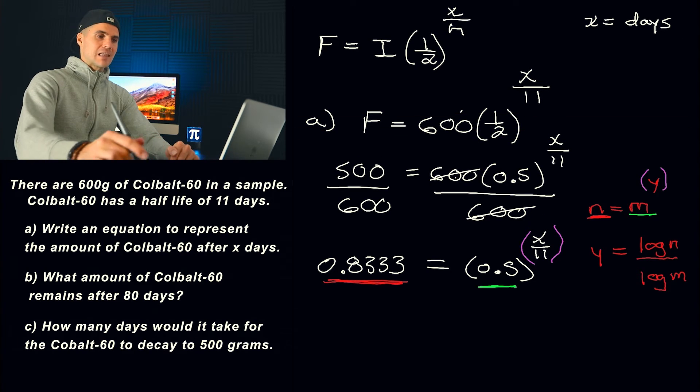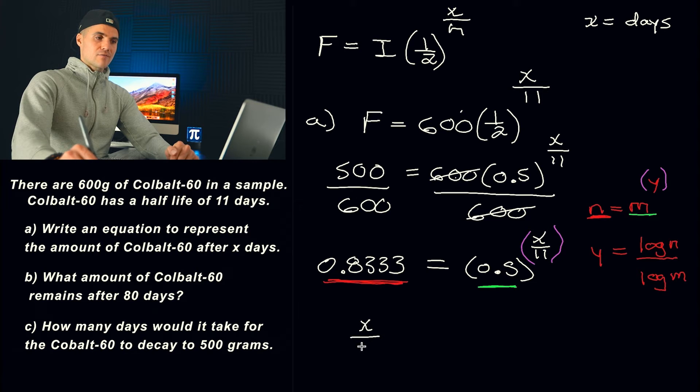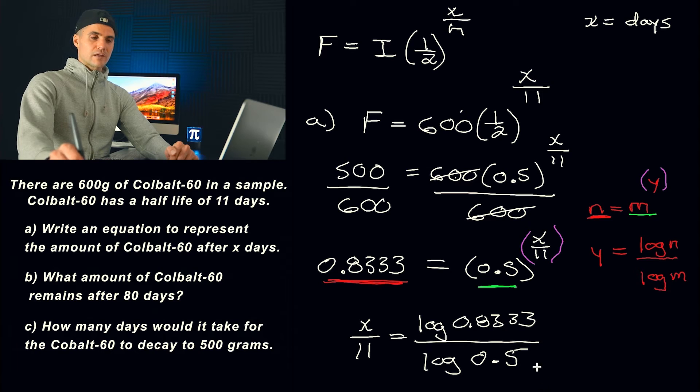So basically, your next line is going to be the exponent, which is the x over 11, is going to be the log of the n value, which is the 0.8333, over log of the base, which is 0.5. And then these are just numbers here. So from here, you just have an equation to solve.